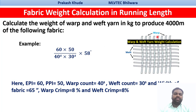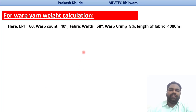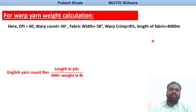Now we will see the weight of warp yarns required for the production of the fabric. In this case we know that the EPI is 60, warp count is 40, fabric width is 58, warp crimp is 8 percent, and the length of fabric is 4000 meters. In our yarn numbering systems we know that the English count is the number of hanks of 840 yards which weighs one pound.